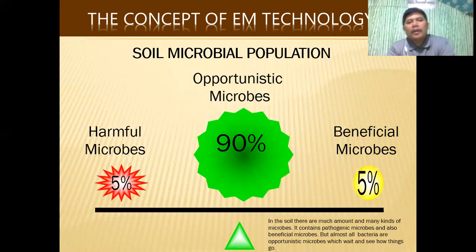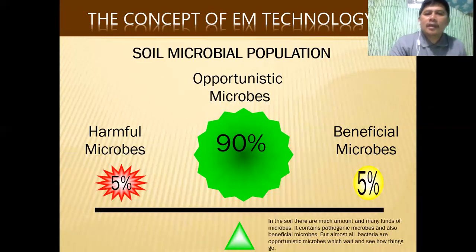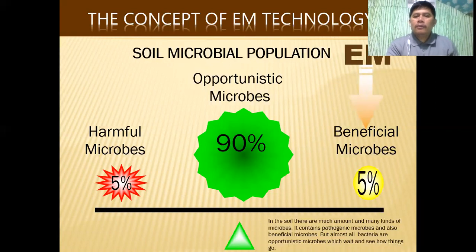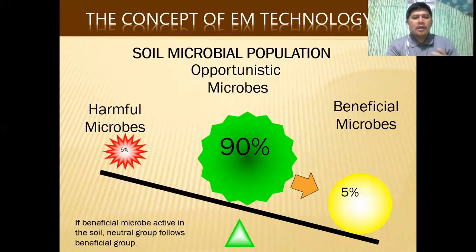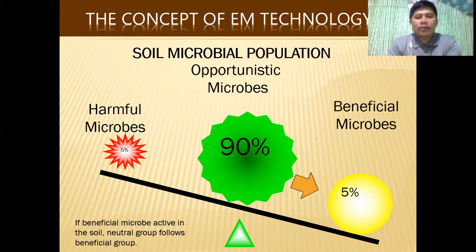As mentioned, there are harmful microbes, beneficial microbes, and also opportunistic microbes. In terms of population, about 90 percent of microorganisms available in the environment are neutral by nature. If we increase the beneficial microbes, these opportunistic microbes will also become beneficial microbes. But if harmful microbes are dominant, then you can imagine how polluted the environment will be.